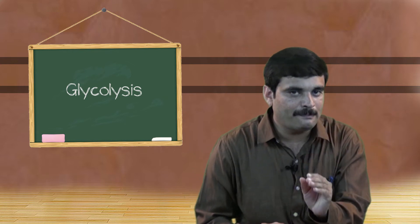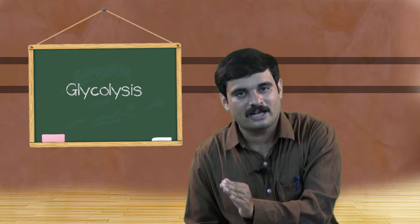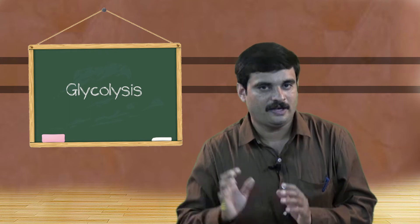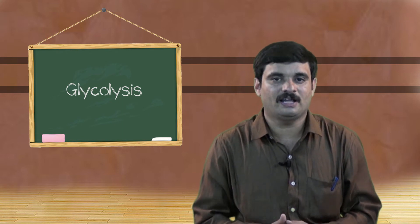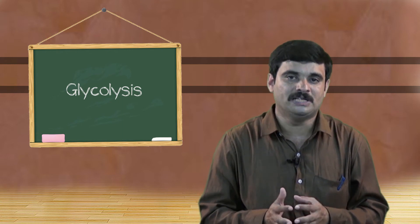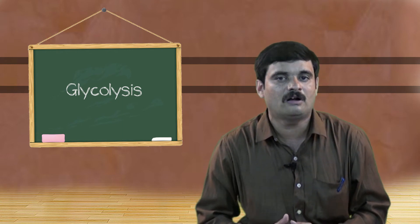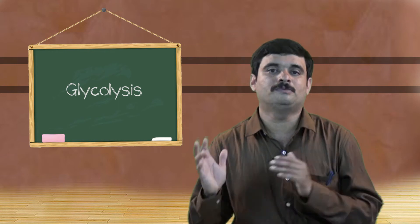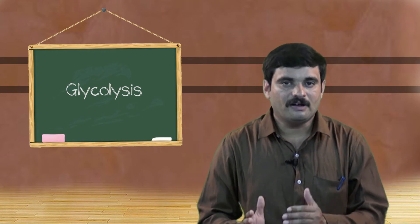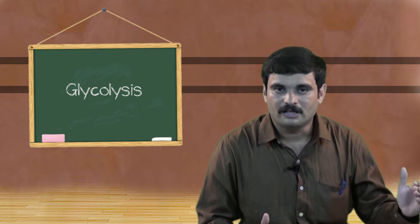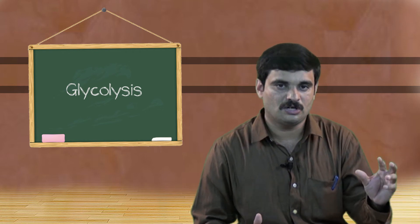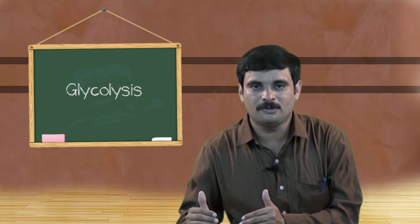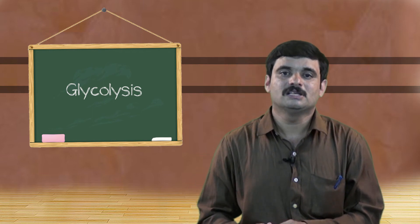Dihydroxyacetone phosphate can be abbreviated as DHAP and glyceraldehyde 3-phosphate as G3P or 3-PGA. The fifth reaction is again an isomerization reaction where DHAP gets isomerized into 3-PGA, mediated by the enzyme triose phosphate isomerase.